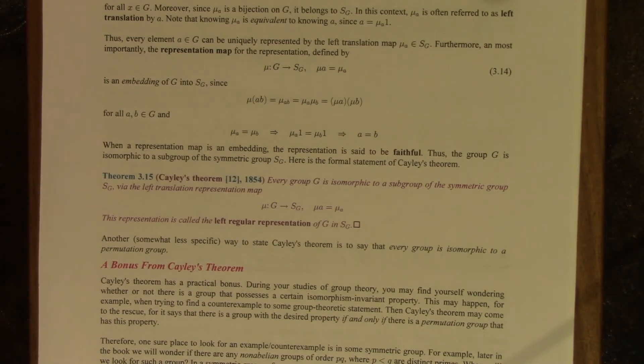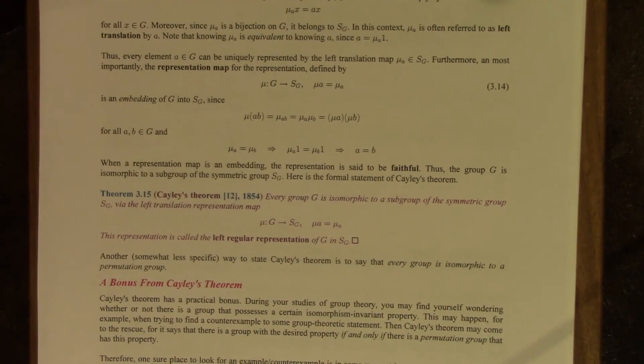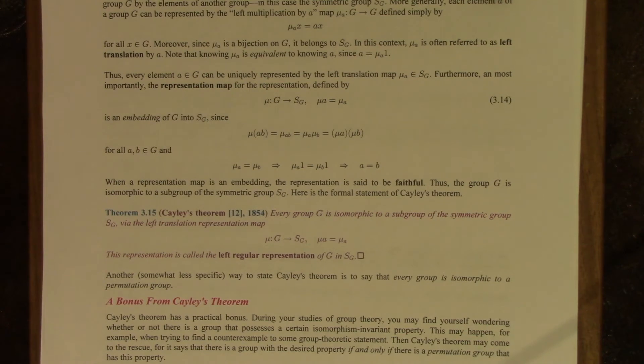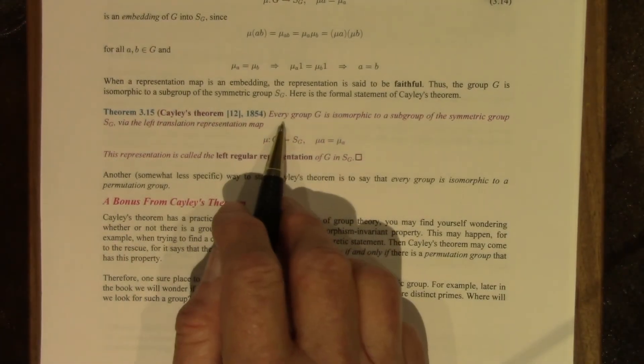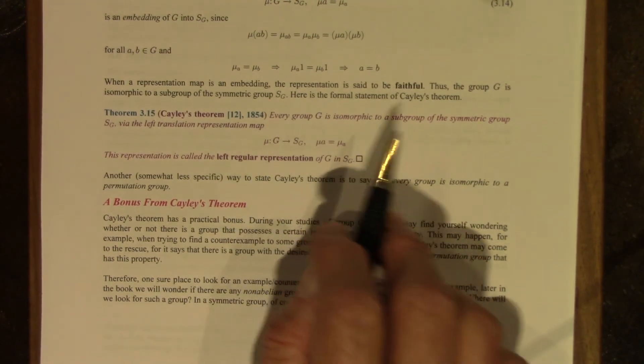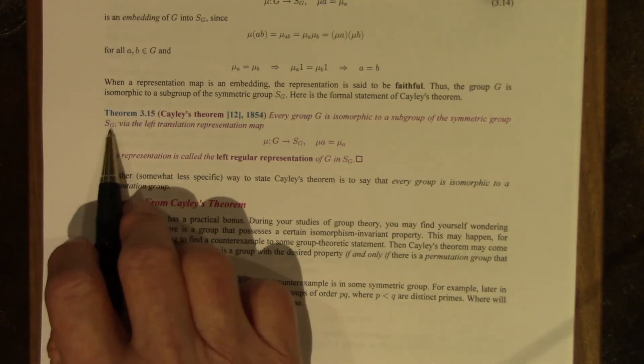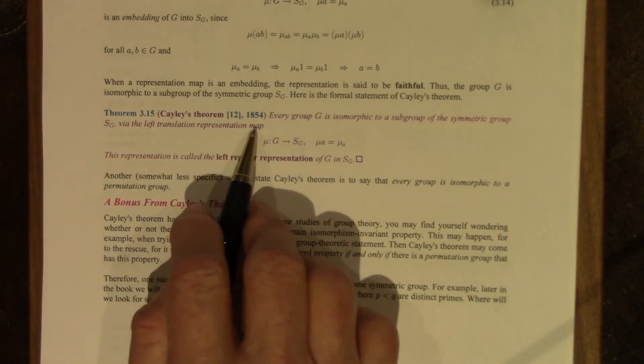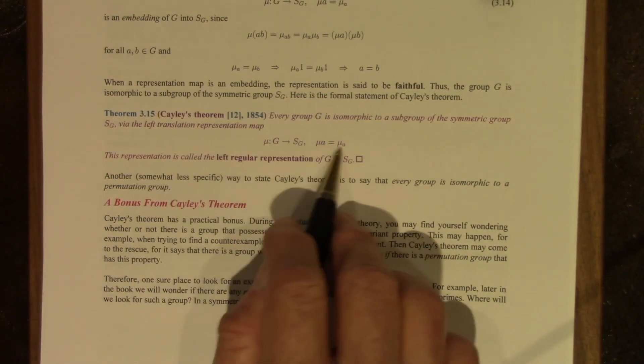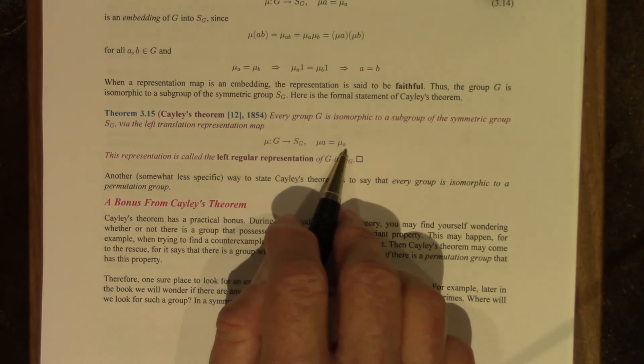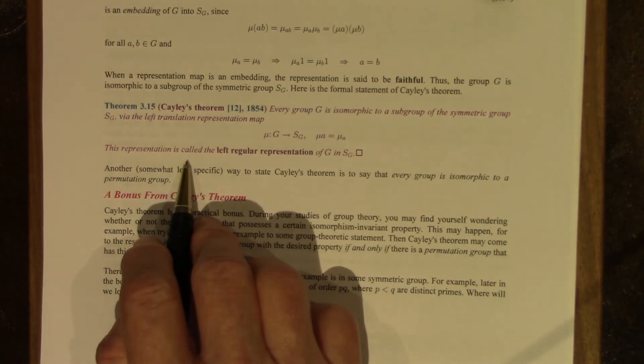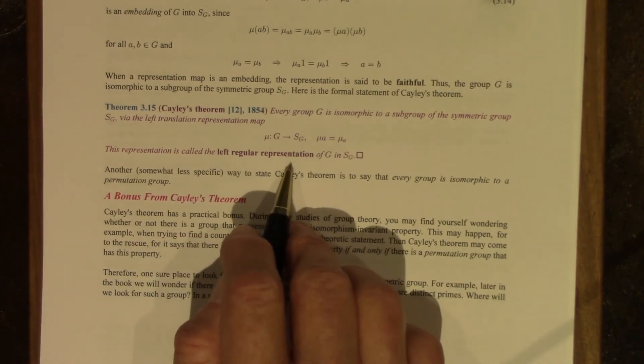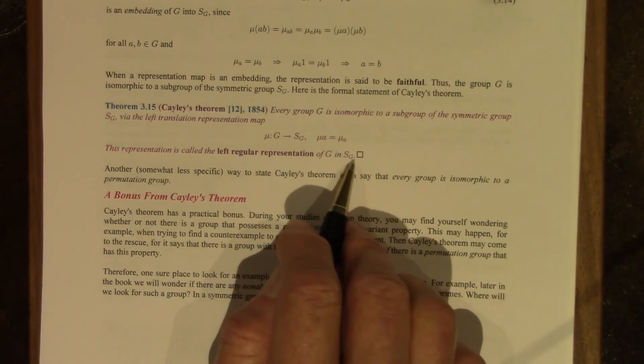It may also have an isomorphic copy in other symmetric groups. That may or may not be the case, but it will. Yes, it will, but it doesn't matter. The point here is it has a faithful representation, an exact copy in some symmetric group. So that is the content of Cayley's theorem. Every group G is isomorphic to a subgroup of the symmetric group S sub G via the left translation representation map, the map that sends A to mu sub A, multiplication on the left by A. And this representation is called the left regular representation of G in S sub G, the symmetric group.